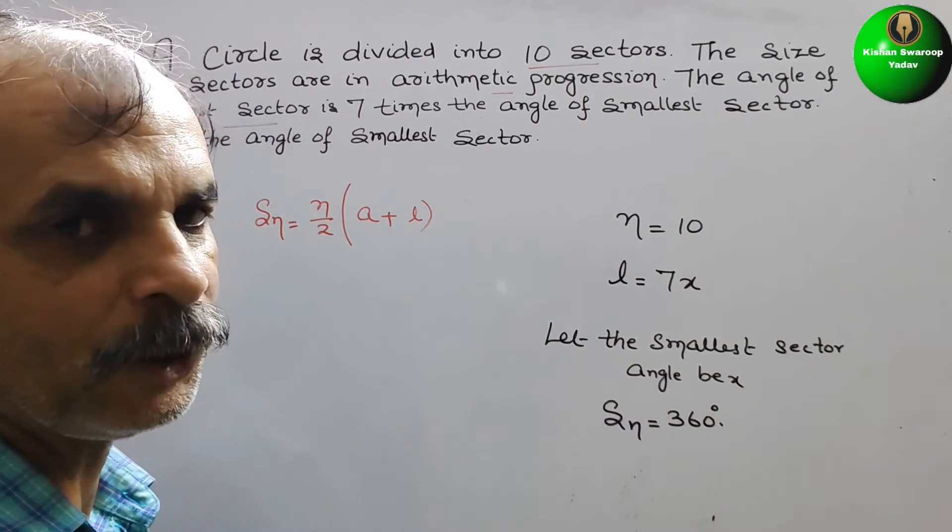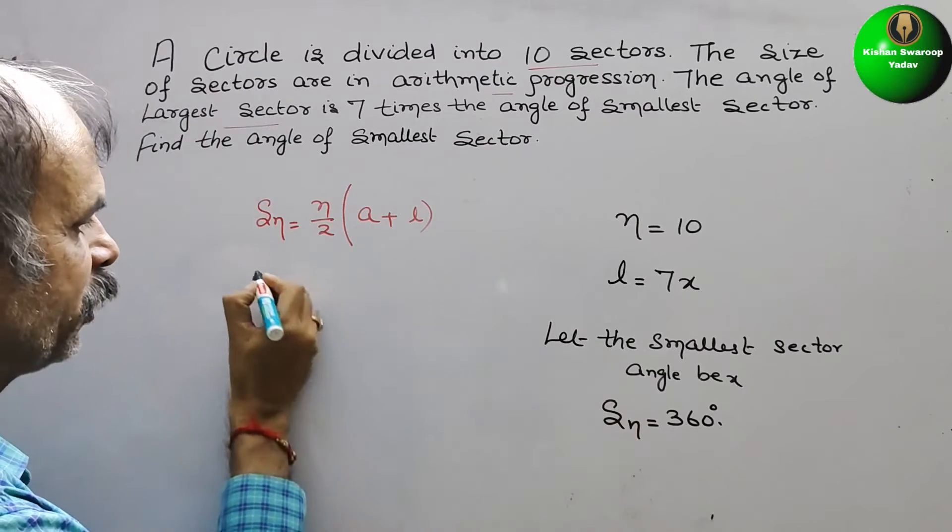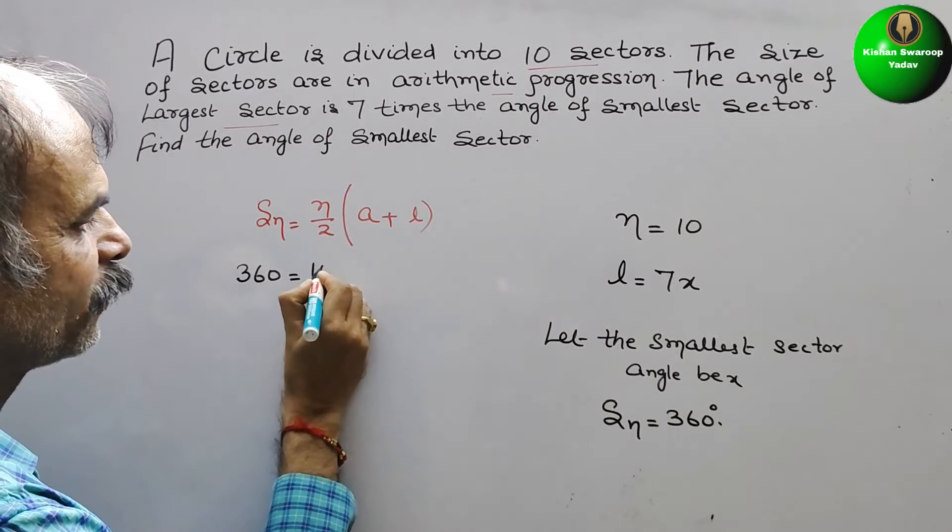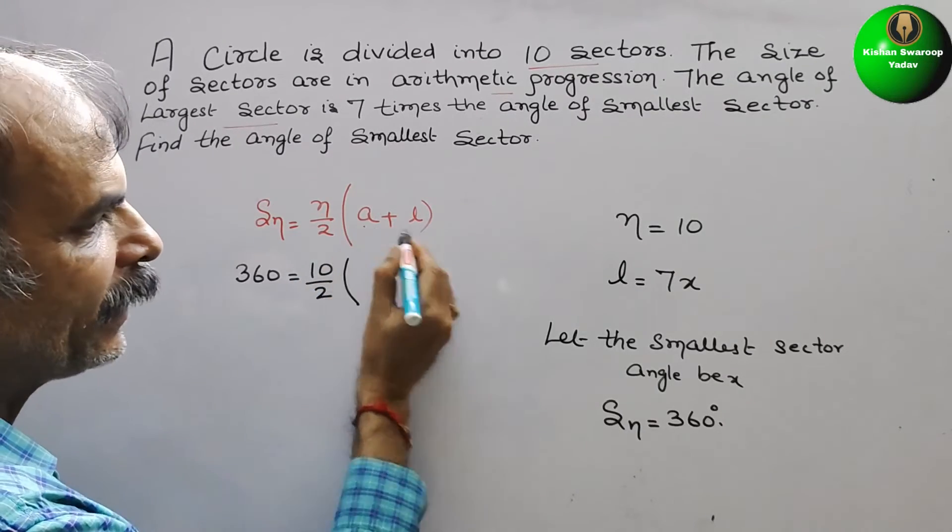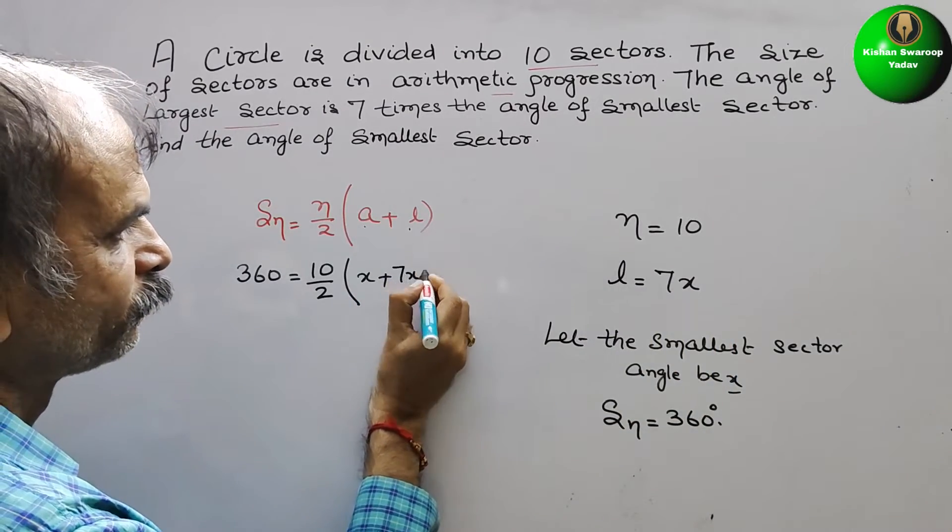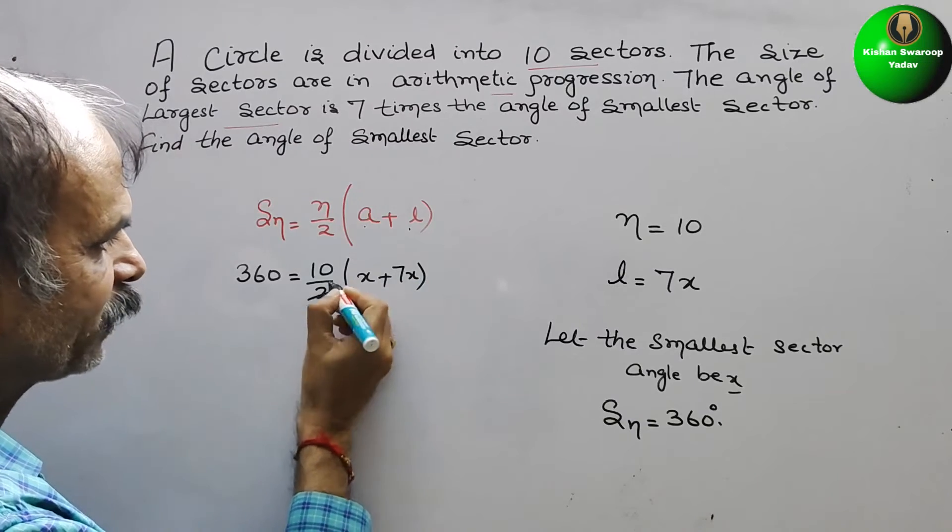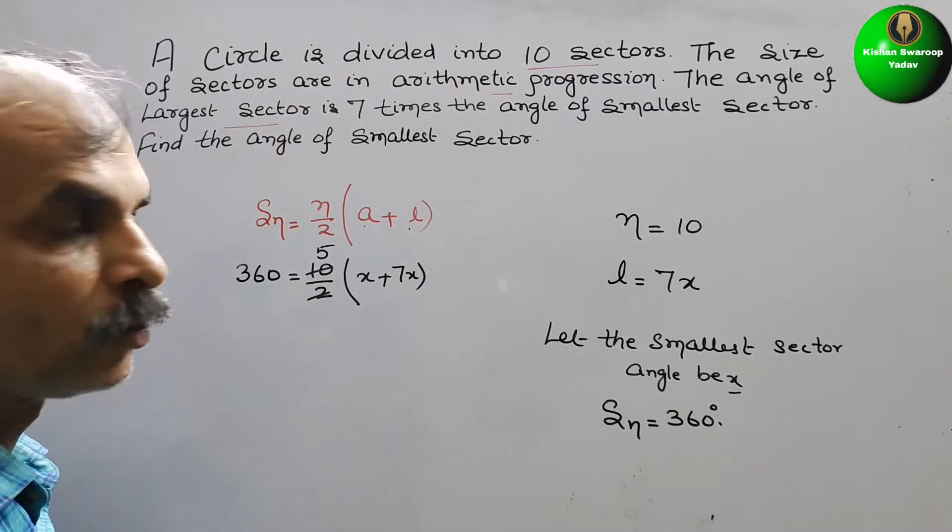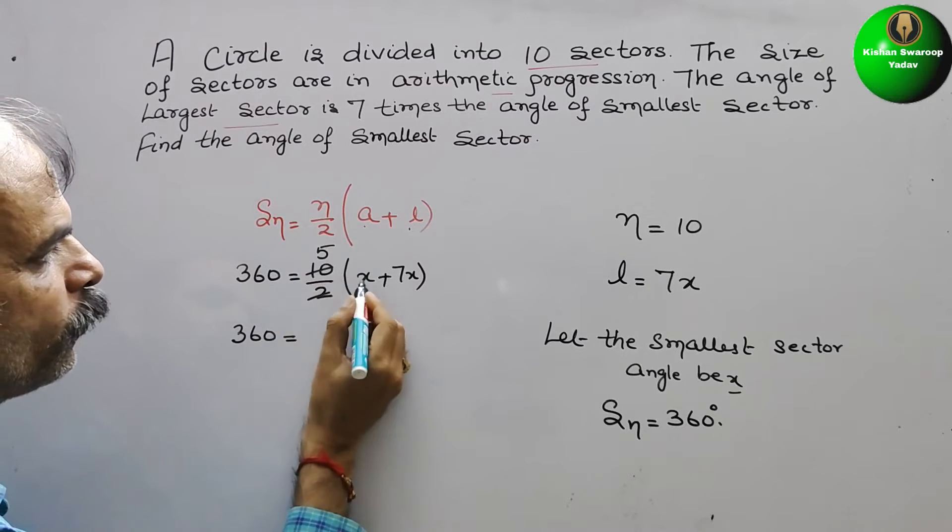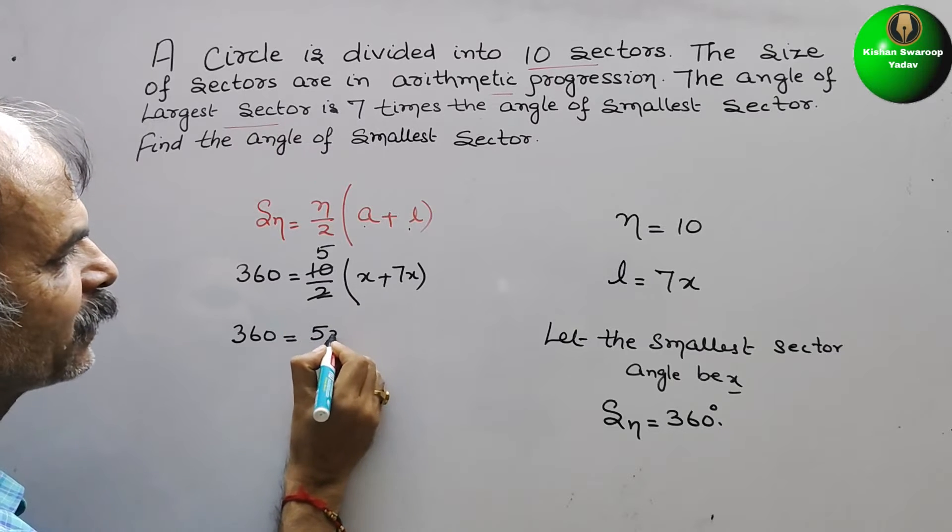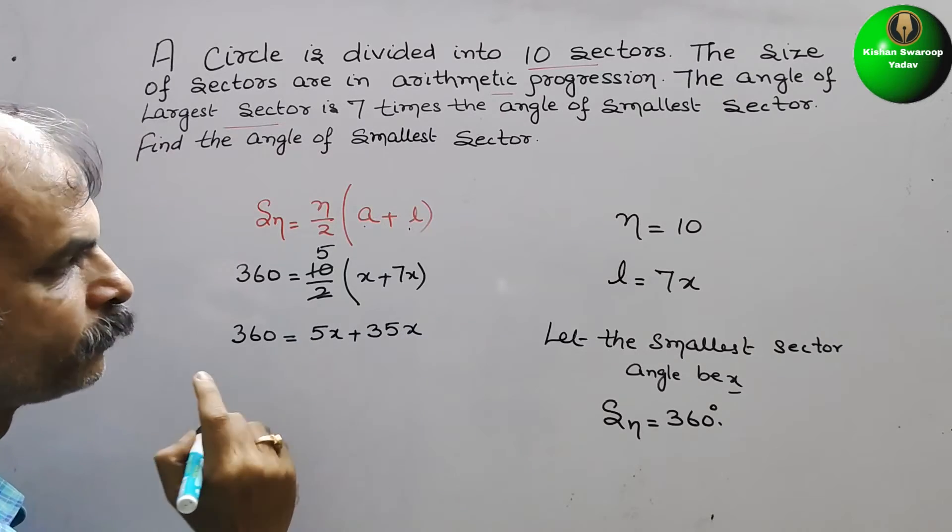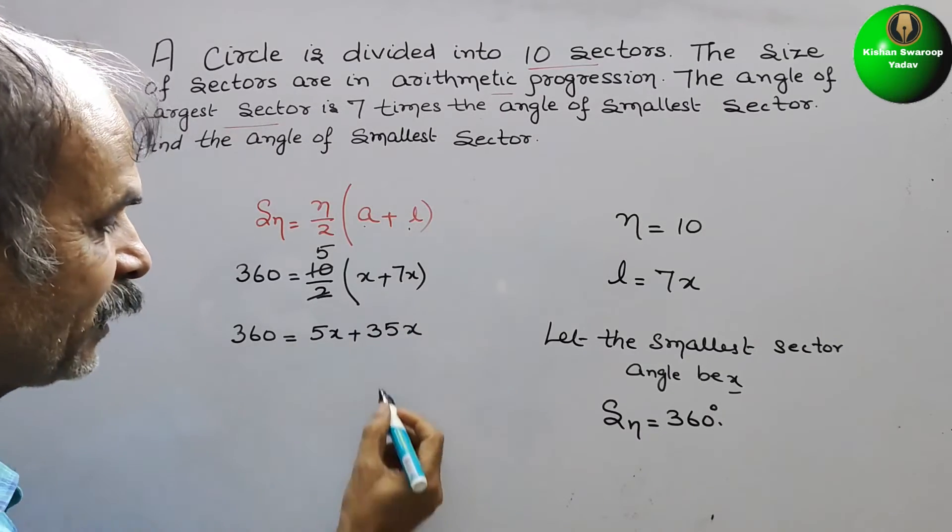We know both the values. So here Sn is 360. 360 is equal to n is 10, so 10 by 2. A is x and L is 7x. Now divide it, so it will be 5. So now we will get 360 degrees is equal to 5 times x plus 7x, or you can say 8x.